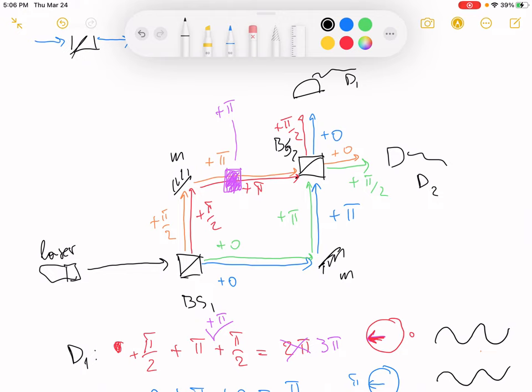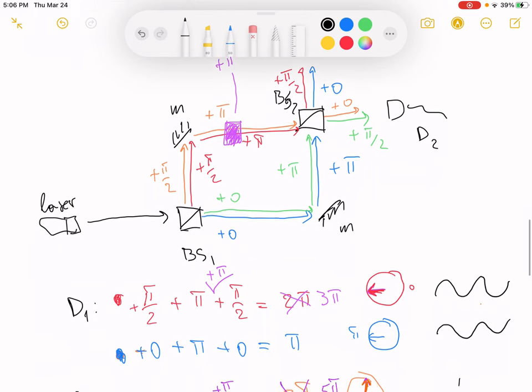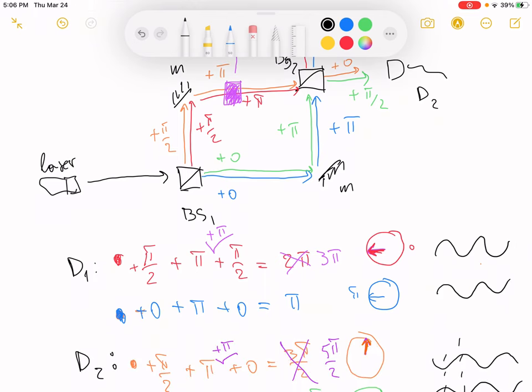But for now it's important to see that we can, by shifting the phase difference on one of the paths, control the constructive or destructive interference in the Mach-Zehnder interferometer. And I think it's useful to understand how you can play around with this.